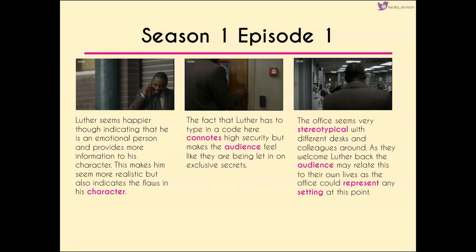Luther seems much happier when talking to Zoe, indicating he's quite an emotional person, giving us more information about his character. This makes him seem more realistic but also gives an indication of the flaws within his character that we can imagine are going to pop up later in the series. The fact that Luther has to type a code into the door suggests high security but also makes us as an audience feel like we're being let in on an exclusive secret — like we're getting something we wouldn't get from another show.